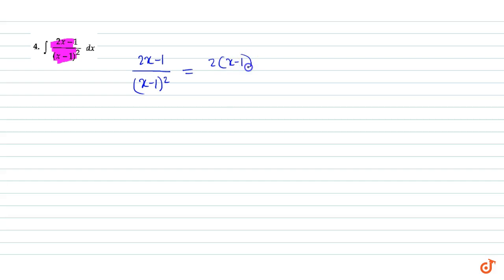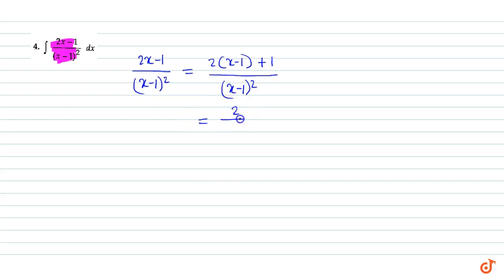This is equal to 2x minus 1 plus 1 divided by x minus 1, the whole square. This is equal to 2 divided by x minus 1, plus 1 by x minus 1 the whole square. So our integral becomes: